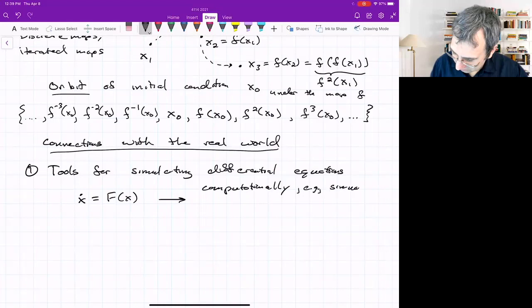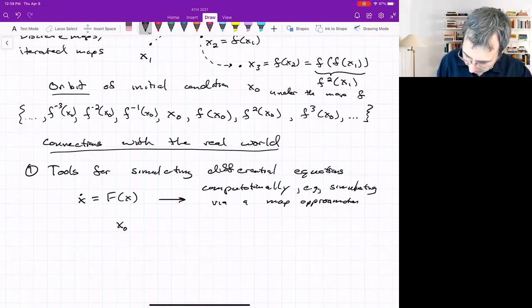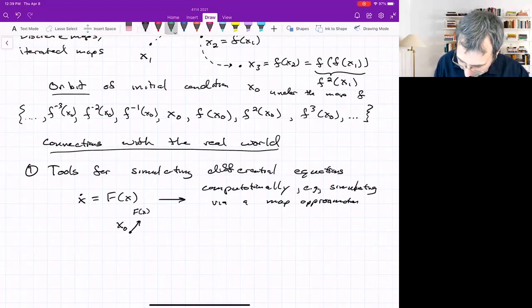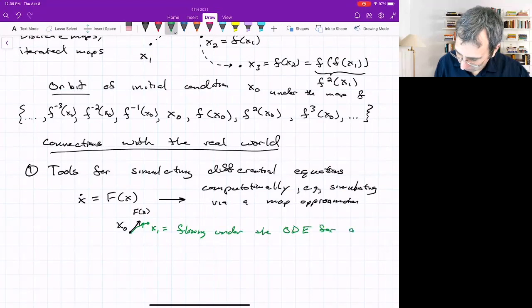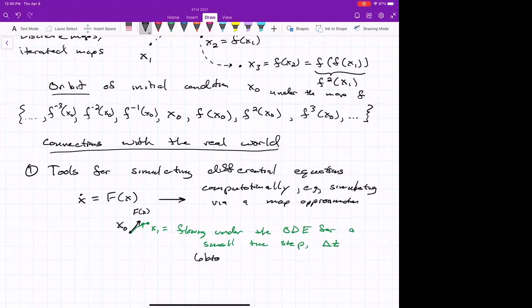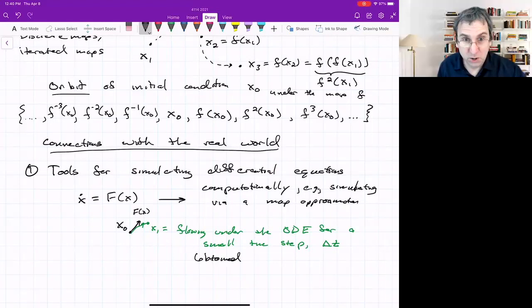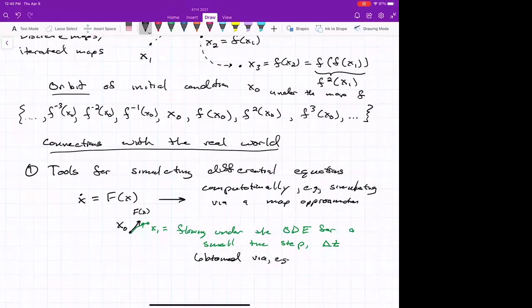it's creating a map from this ODE. So you actually are simulating a map approximation that tells you if you start with this initial condition and there's the vector field, where will you go after some short amount of time, maybe a long amount of time later, you'd be here at x1. So x1 would be the flowing under the ODE for a small time step delta T. And that's obtained from something like a Runga-Kutta algorithm, if you've used ODE 45.